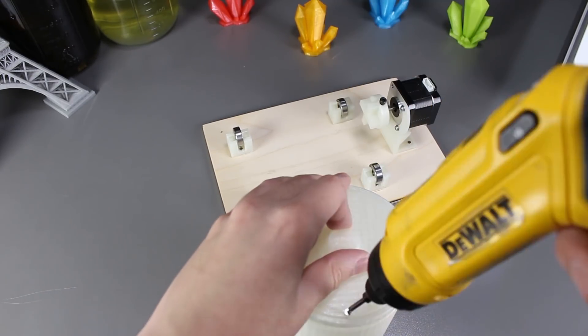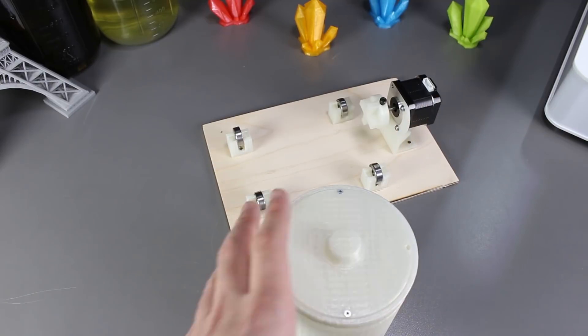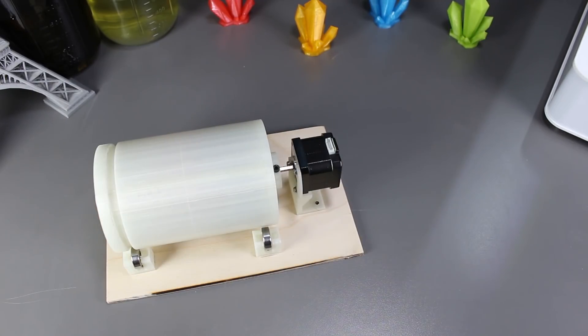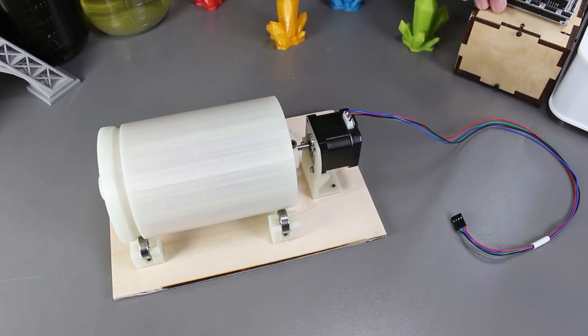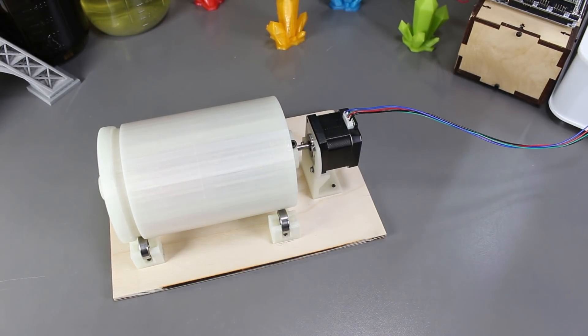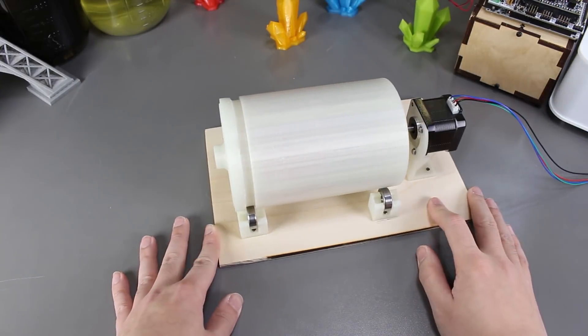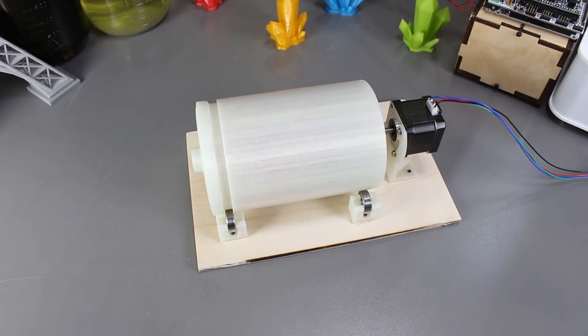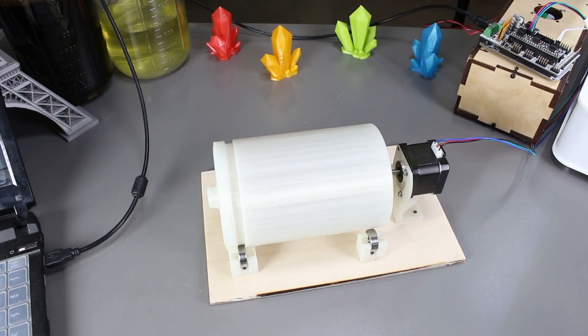Once we have done that, we can slot it back into the motor and attach it to the Arduino and power supply. We'll plug in the motor cable into the driver slot and then next we'll connect it directly to the laptop via USB. We'll input our commands to start the tumbler. Here it goes!